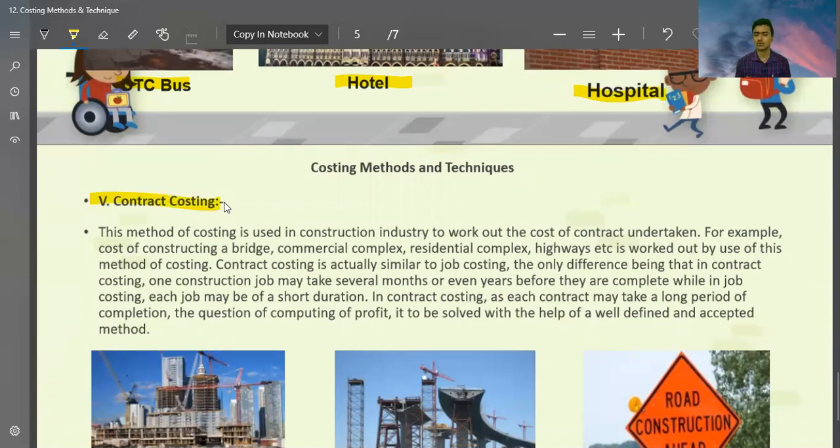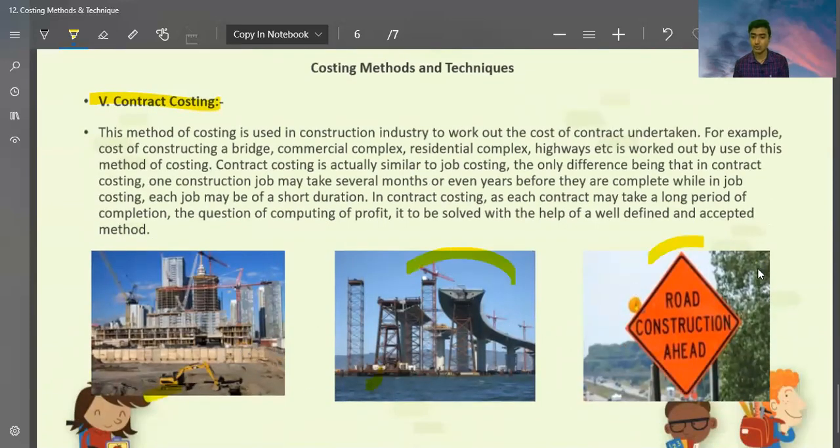Contract costing is especially for construction companies. This method of costing is used in construction industry to work out the cost of contract undertaken. For example, cost of constructing a bridge, commercial complex, residential complex, highway, etc., is worked out by use of this method of costing. Contract costing is actually similar to job costing. The only difference being that in contract costing, one construction job may take several months or even a year before they are completed. While in job costing, each job may be of short duration. In contract costing, each contract may take a long period of completion. The question of computing a profit is solved with the help of well-defined and accepted methods.